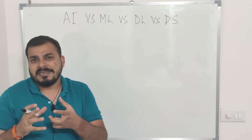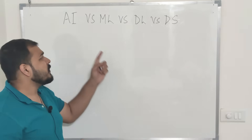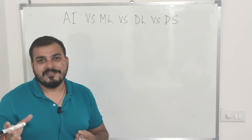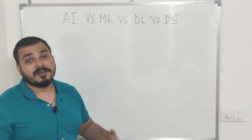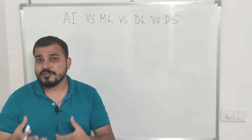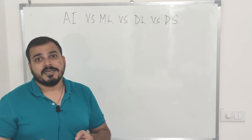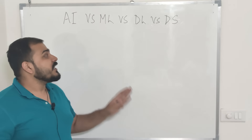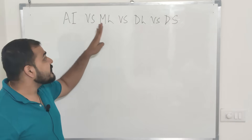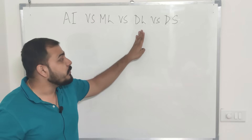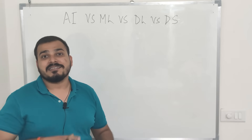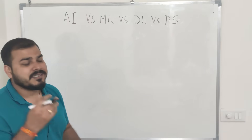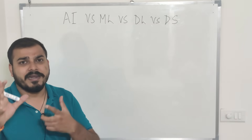I probably should have uploaded this video first, but I missed it. Many of you still have confusion regarding this topic, so in this video I'm going to clear that confusion and tell you what exactly is artificial intelligence, machine learning, deep learning, and how data science uses all these technologies. I'm also going to create some Venn diagrams.